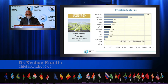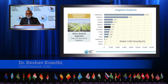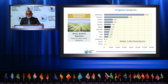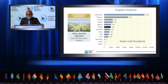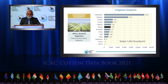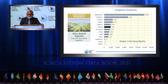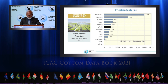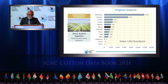In the next five slides, we will explore five aspects of environmental sustainability, such as irrigation water, fertilizers, pesticides, land-use efficiency, and soil health. First, let us take a look at irrigation water.